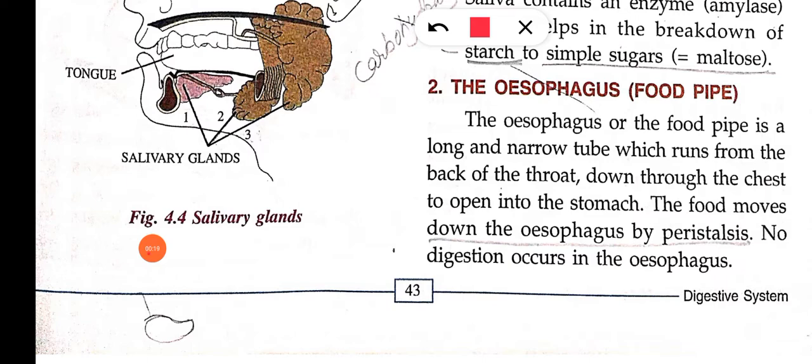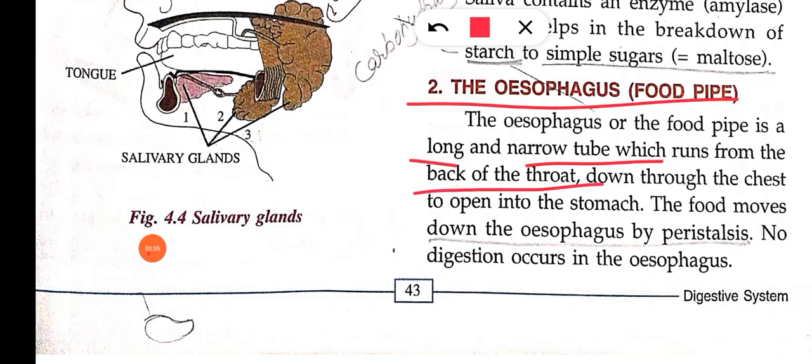In this video we will discuss the esophagus. The esophagus is also known as the food pipe. The esophagus, or food pipe, is a long and narrow tube — it is long but narrow, so it does not have a lot of width.